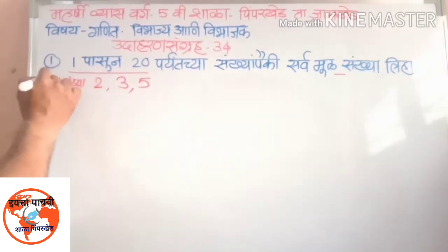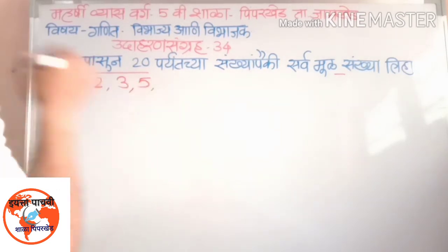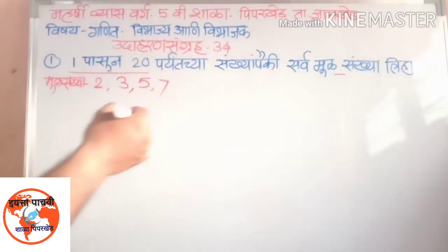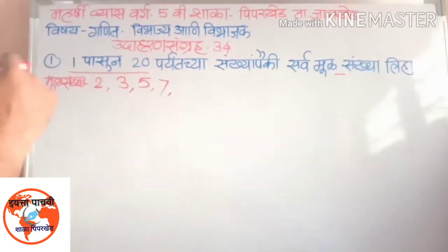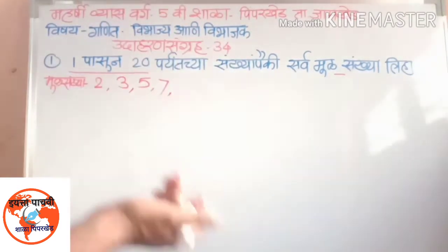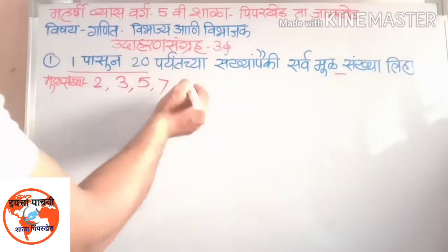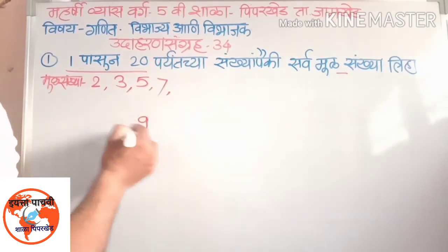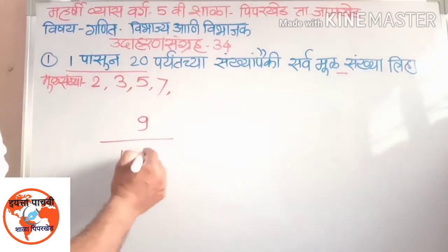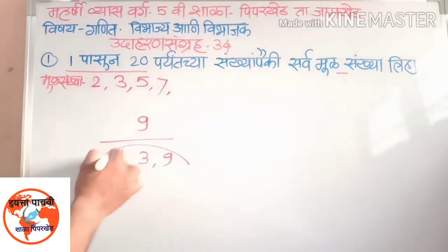मूळ 4 इचे तेणे भाजकात 7, 7, 7. Then 8, 8, 8, 8. Then 2, 4, 8, 8, 8, 9. Then 9, 9, 9, 9, 9. 1, 3, and 9, 2.